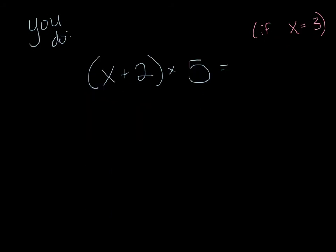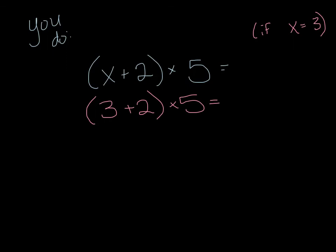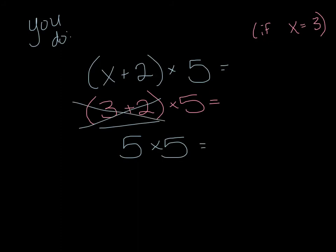Your turn. You're going to do the sum of x and 2, multiplied by 5. x equals 3. Plug in the 3 for x and then solve it using your order of operations. Push pause when you've got an answer, then push play to check. The first step is to plug in x equals 3, then bring down everything else. Order of operations: parentheses first — 3 plus 2 is 5. Then 5 times 5 is 25. There's the answer.